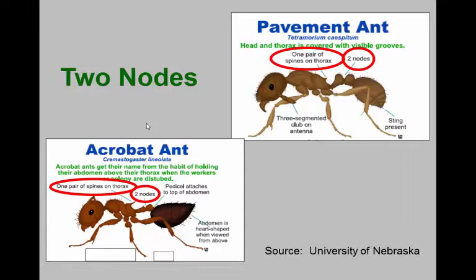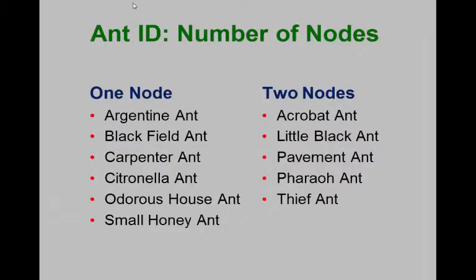In the case of the acrobat ants, it's a two-node ant, but the difference is the pavement ant has only one pair of spines on the back, while the acrobat ant has two spines on the back of the thorax. The acrobat ant is called that because, looking down from above, it has a heart-shaped abdomen. They're called acrobat ants because when they walk around they tend to wave their abdomen around with them. One of the first things I look at in an ant is whether it has one node or two nodes, and then I go from there to help identify them.